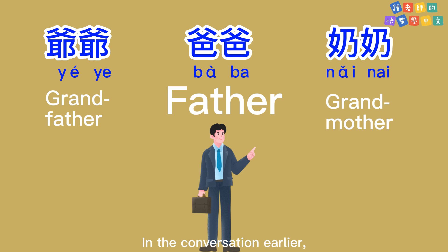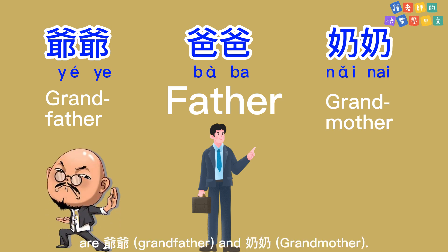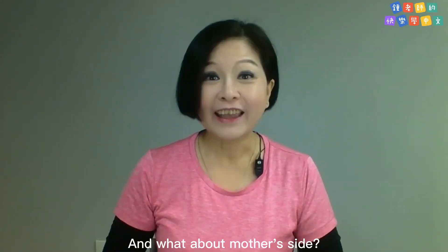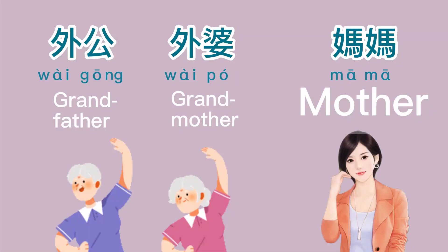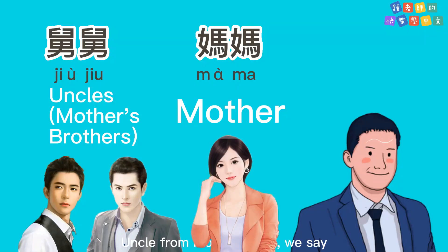In the conversation earlier, we mentioned that grandparents from father's side are 爷爷 — grandfather, 奶奶 — grandmother. And what about mother's side? Grandfather from mother's side, we say 外公. For grandmother from mother's side, we say 外婆. Uncle from mother's side, we say 舅舅.